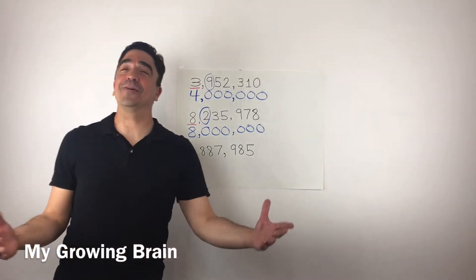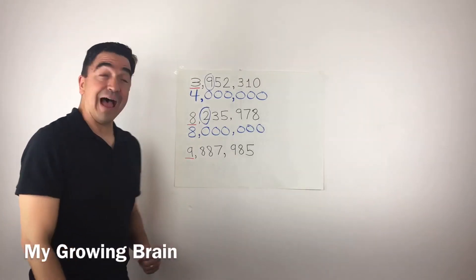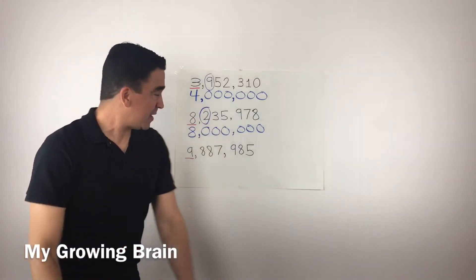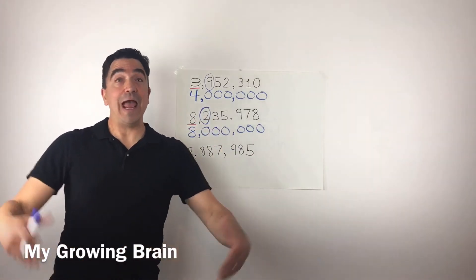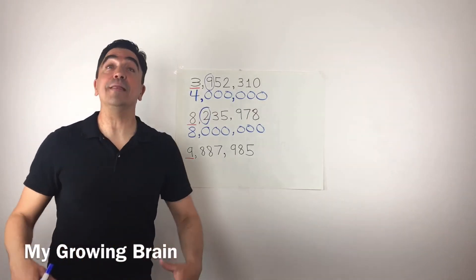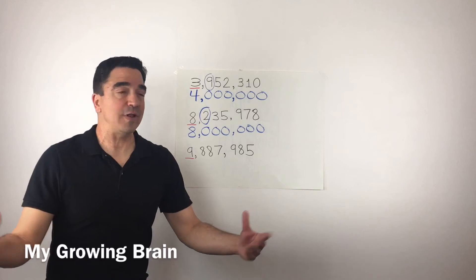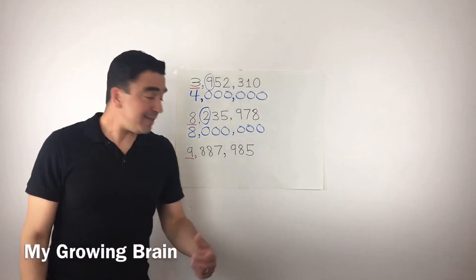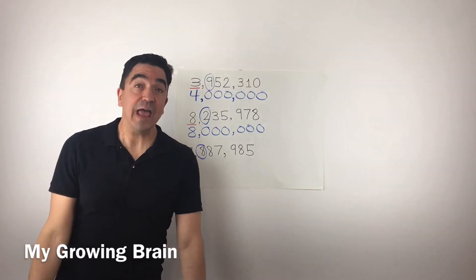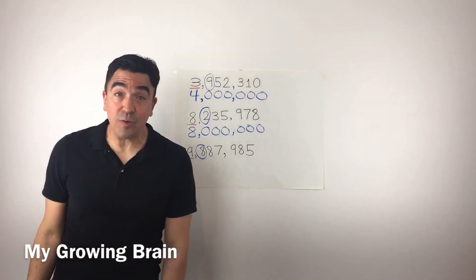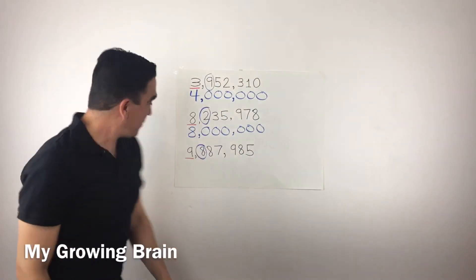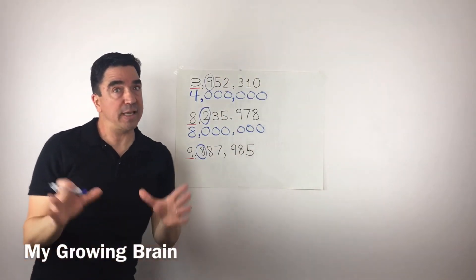Here's our last problem: nine million, eight hundred eighty-seven thousand, nine hundred eighty-five. Once again, the nine is in the millions place, and the eight in the hundred thousandths place is underlined. The eight in the hundred thousandths place is going to tell the nine what to do — the eight is going to tell the nine to go up. So the nine becomes a ten.